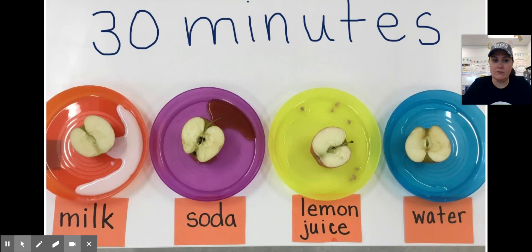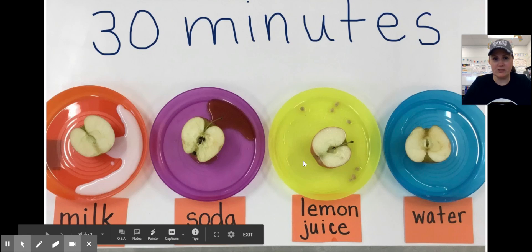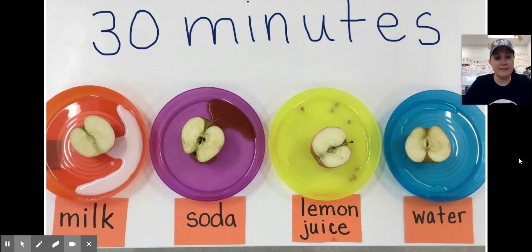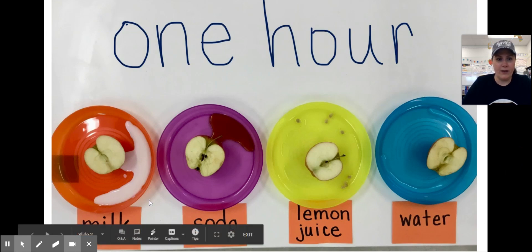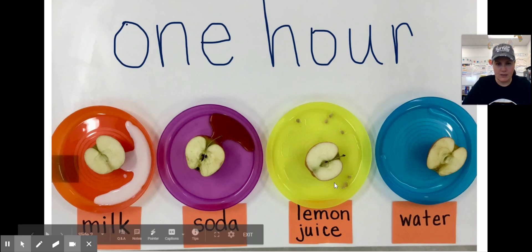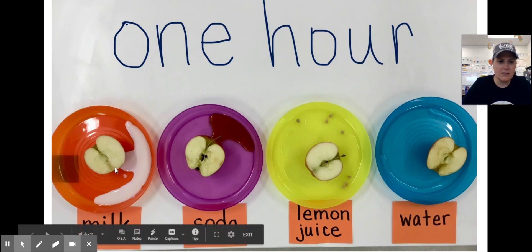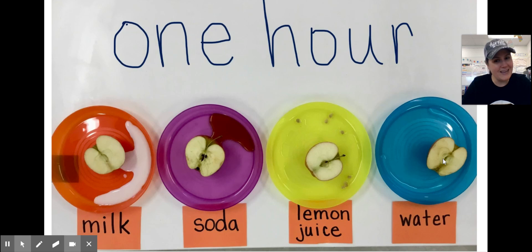This is what our apples looked like after 30 minutes. It looks like the milk is doing okay and the lemon juice is doing okay, but the soda has started to turn and the water has started to turn. After one hour, the milk and the lemon juice look pretty similar — the milk has started to change just a little bit. Our soda is still turning brown and our water is the most brown. Let's see what the apples looked like after an hour and a half.